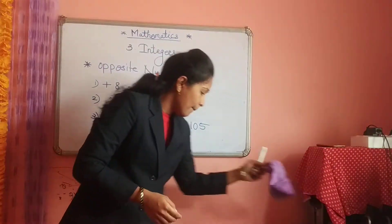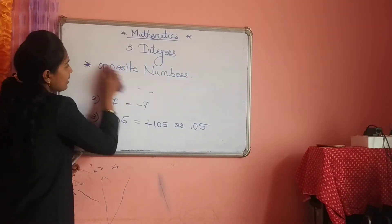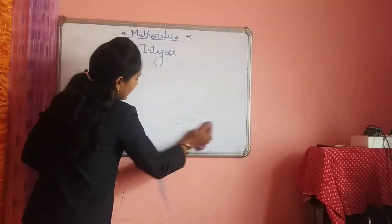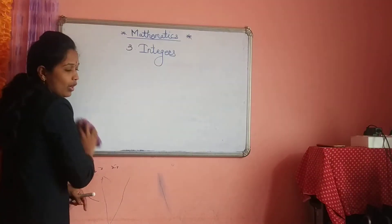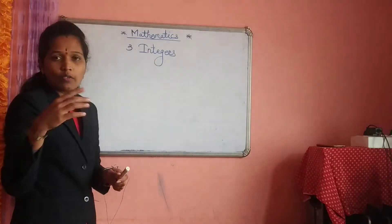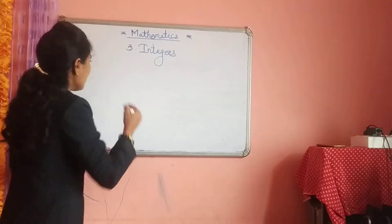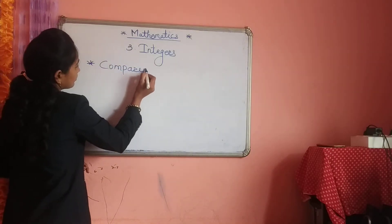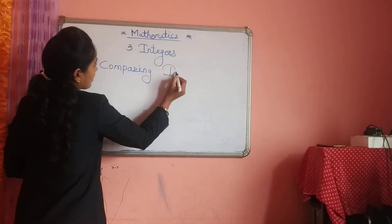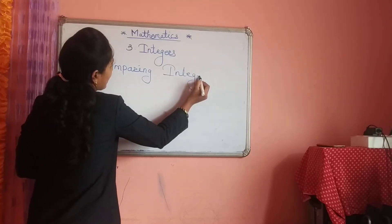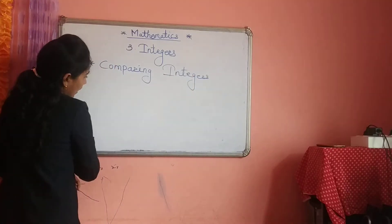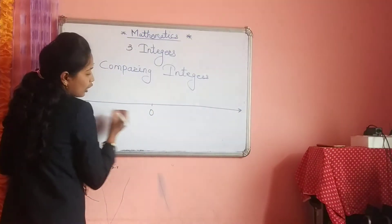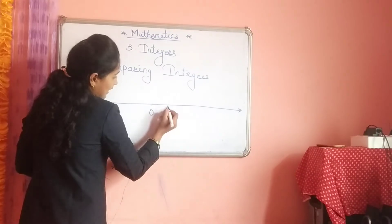The next topic is comparing integers. What is the meaning of comparing integers? We have to do the comparison between integers — meaning we have to write down the sign of greater than, smaller than, or equal to. We have seen our chapter on integers, so we have to compare between integers. Pay attention: first of all, we can draw the number line, starting at 0.